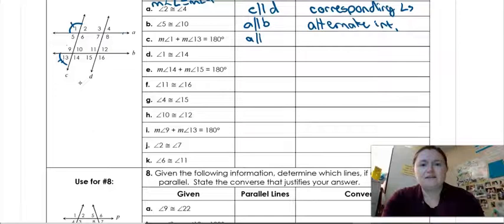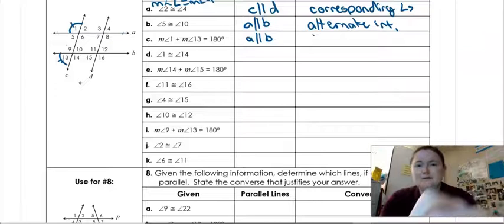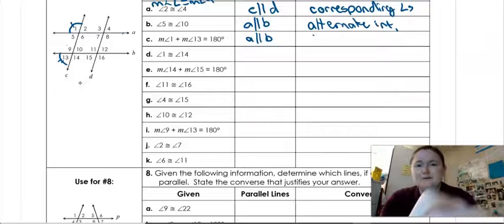So I'm going to write, that does prove that A is parallel to B by alternate, or no, sorry, not alternate. We were talking about consecutive. Notice alternate is always congruent. Consecutive is always supplementary. So consecutive exterior angles.